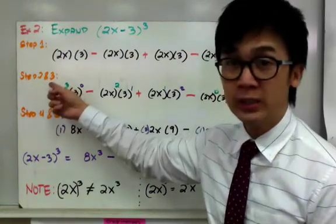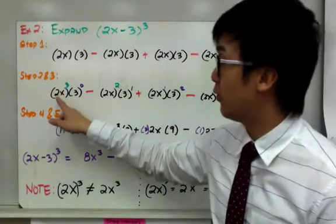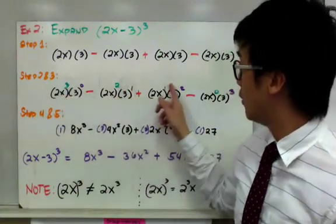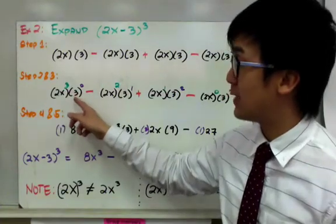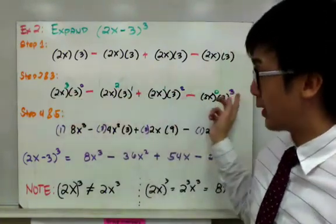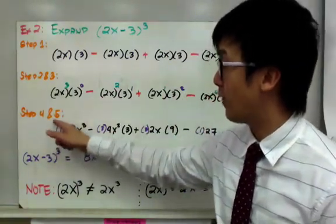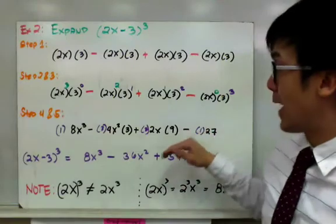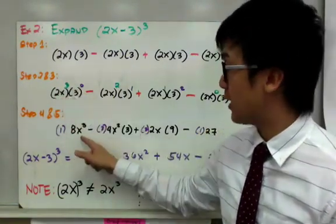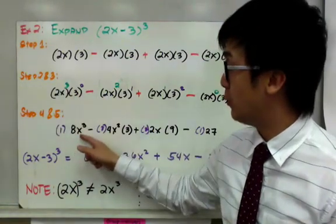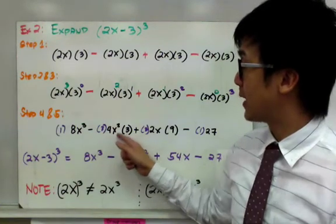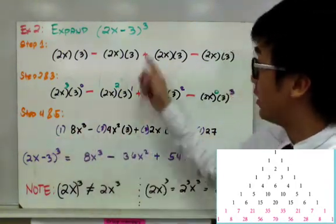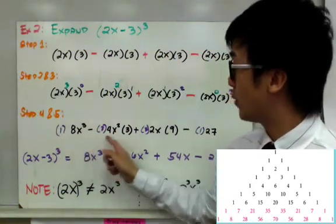For the second and third steps, I incorporate the exponents for each factor. For the first factor 2x, I have a descending exponent: 3, 2, 1, and 0. For the second factor 3, I have an ascending order: 0, 1, 2, and 3. Combining steps 4 and 5, I simplify the exponents and incorporate the Pascal's Triangle coefficients. So 2x cubed gives 8x cubed, and 3 to the 0 is 1, so the first term is 8x cubed. Then I have 4x squared times 3, then 2x times 9, and then 27. For level 3, Pascal's Triangle gives 1, 3, 3, and 1.